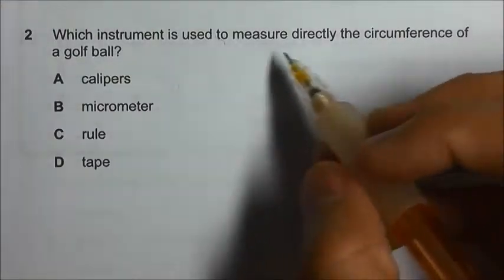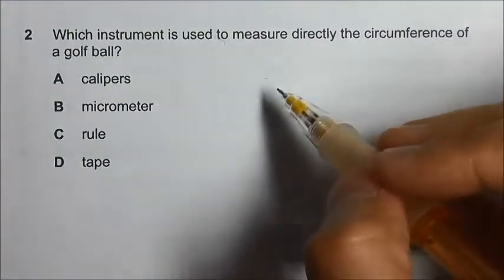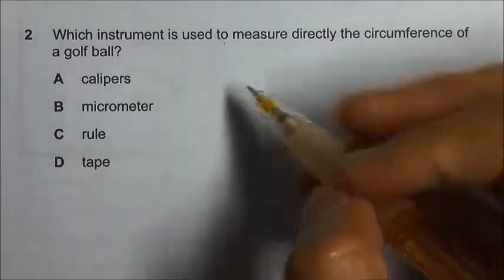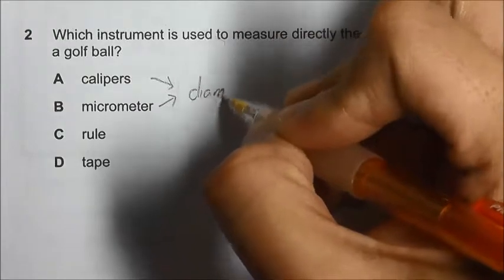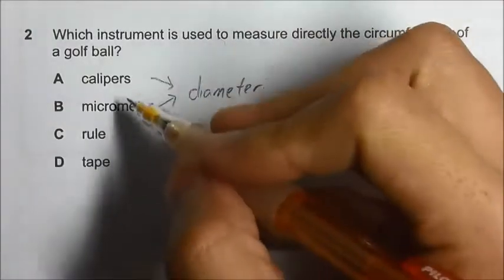To measure the circumference of a golf ball, you need the instrument to be able to go around the golf ball. For calipers and micrometer, you can only measure the diameter, so they are not the answer.